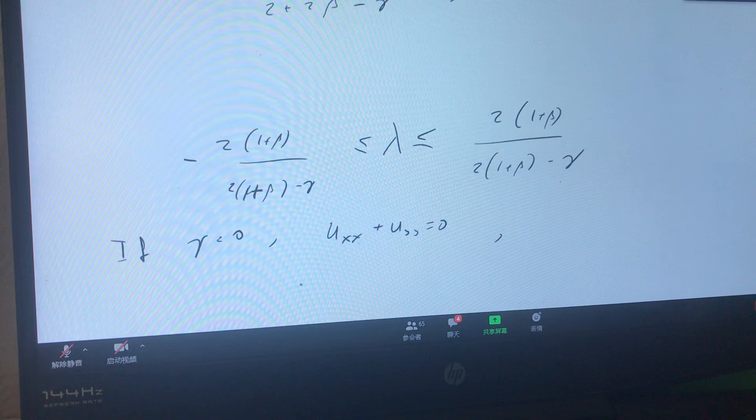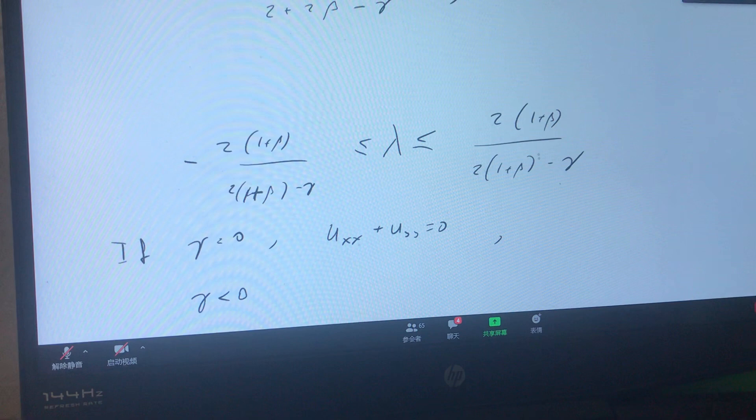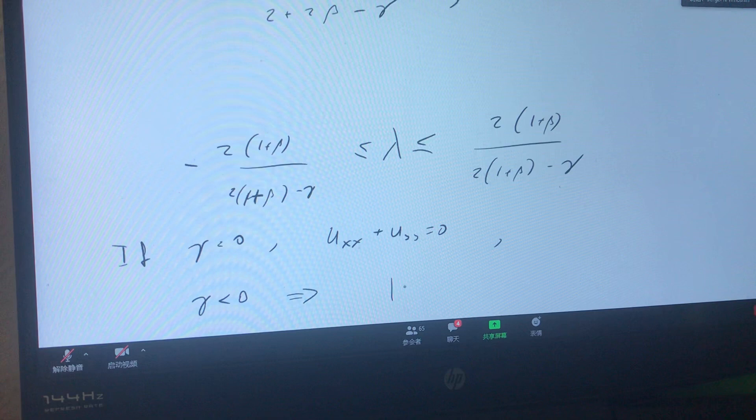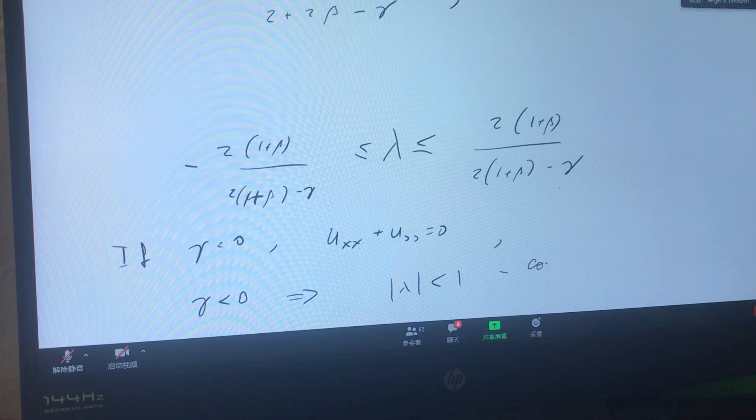If gamma is negative, then the numerator is always less than the denominator, so mod lambda is definitely less than 1. Again, I have convergence.